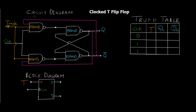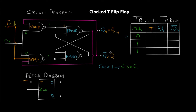Let's begin with the cases and construct the truth table. In case one, clock equals zero. If you already know the truth table of the NAND gate, when any input is zero — and here the clock is zero — both of the first two NAND gates get zero, so the output is always going to be one. This output is then fed to the next two NAND gates. We've already seen the SR latch scenario: when the input of the SR latch is one and one, the output is always going to be the previous state.